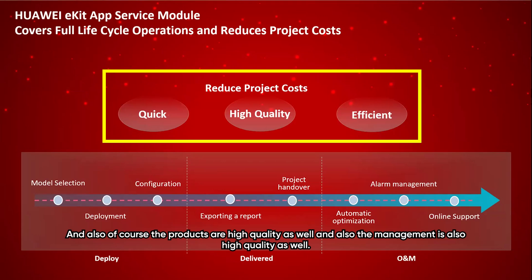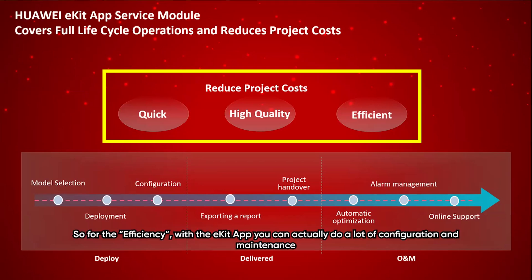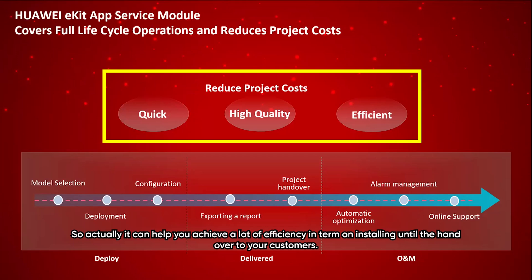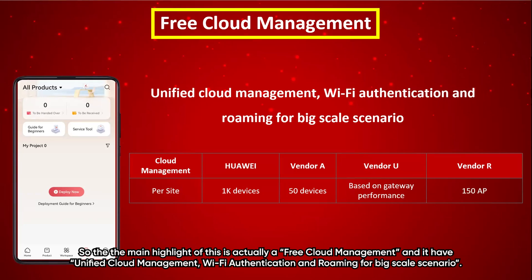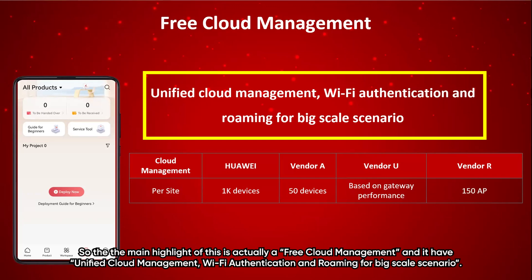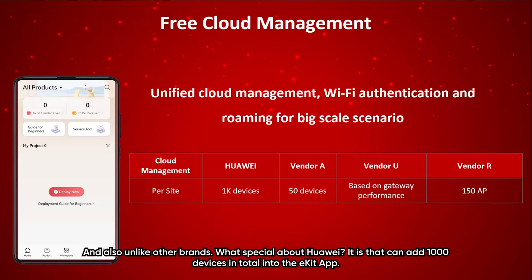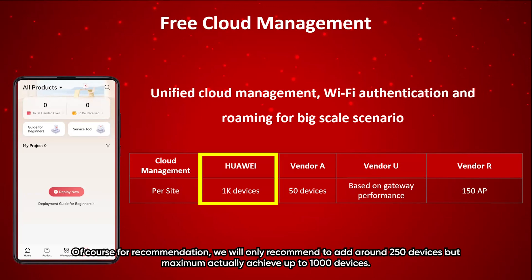With the eKit app, you can do a lot of configuration and maintenance efficiently, from installation all the way through to customer handover. The main highlight is free cloud management with unified cloud management, wire authentication, and roaming for large-scale scenarios. Unlike other brands, Huawei allows you to add up to 1000 devices in total into the eKit app — though we recommend around 250 for best performance.